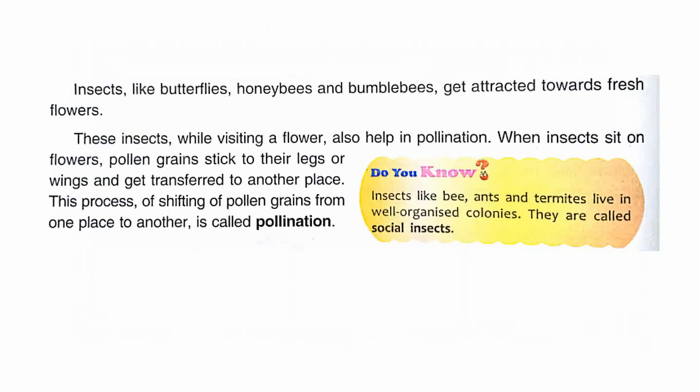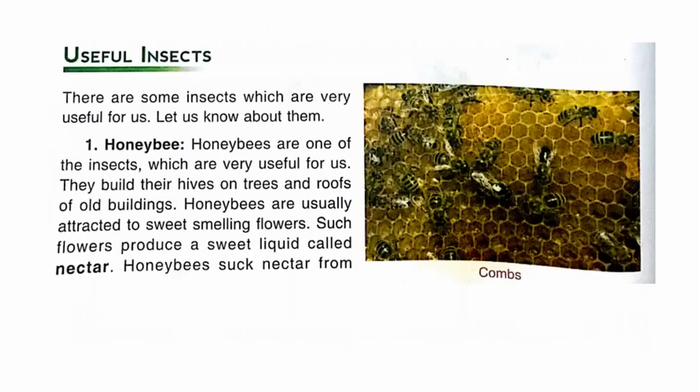The process of shifting pollen grains from one place to another is called pollination. Pollen grains are the powdery substances found in flowers. Insects like bees, ants, and termites live in well-organised colonies — they live in groups and are called social insects. There are two types of insects: useful insects and harmful insects. Today we will learn about useful insects.